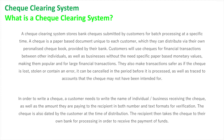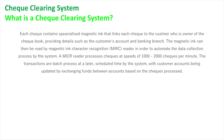I also want to point out to IPT students the use of MICR. Each check contains specialized magnetic ink that links each check to the customer who owns the checkbook, providing details such as the customer's account and banking branch. The magnetic ink can then be read by a Magnetic Ink Character Recognition (MICR) reader to automate the data collection process. MICR readers process checks at speeds of 1,000 to 2,000 checks per minute — that's a lot of checks within a minute.